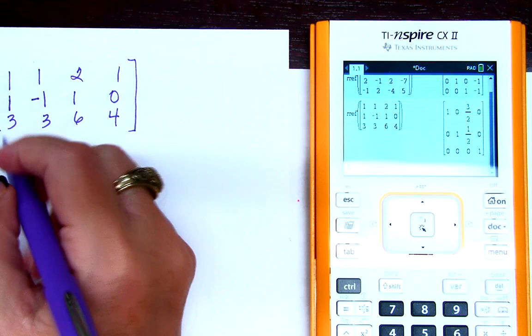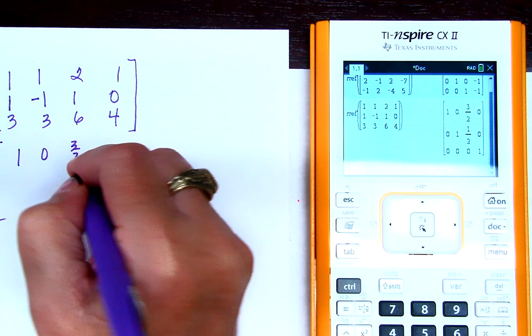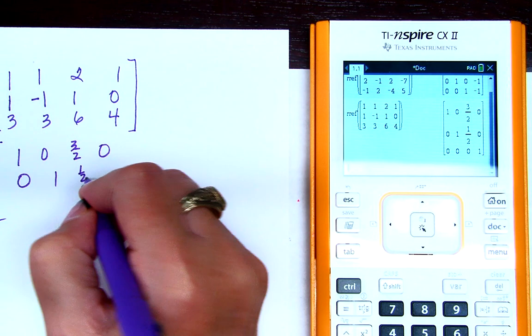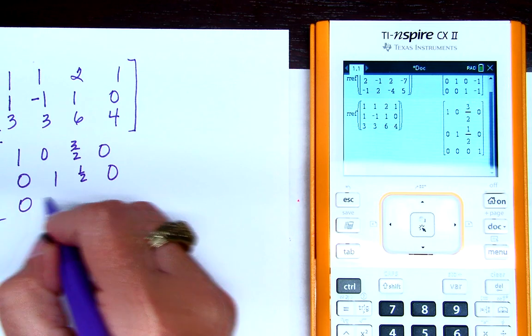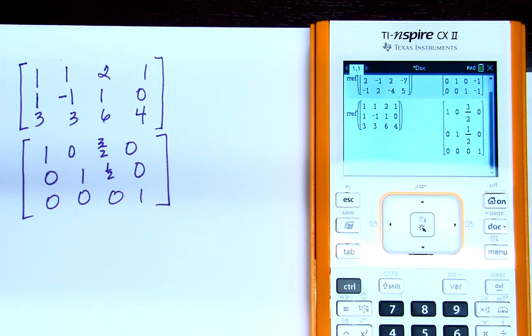So my answer matrix looks like this. 1, 0, 3 halves, 0. 0, 1, 1 half, 0. 0, 0, 0, 1. Is that what yours looks like?